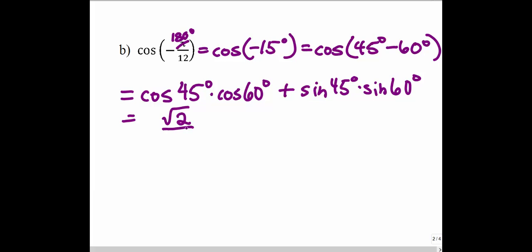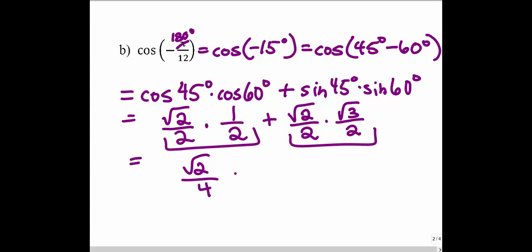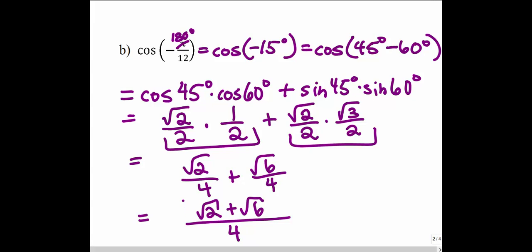Cosine of 45 is square root of 2 over 2, times cosine of 60 which is 1/2, plus sine of 45 which is square root of 2 over 2, times sine of 60 which is square root of 3 over 2. Multiplying across the two fractions gives square root of 2 over 4, plus square root of 6 over 4. Same denominator — keep the denominator and combine the numerators. So cosine of negative 15 degrees, or negative pi over 12 in radians, is square root of 2 plus square root of 6, all divided by 4.